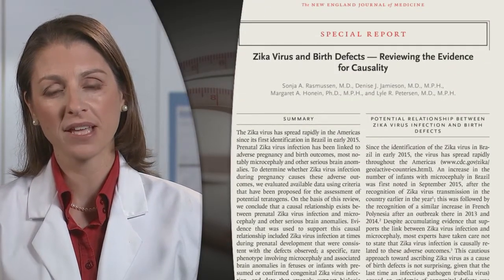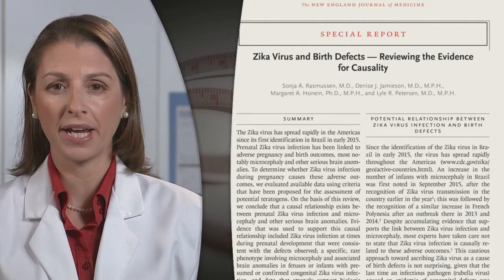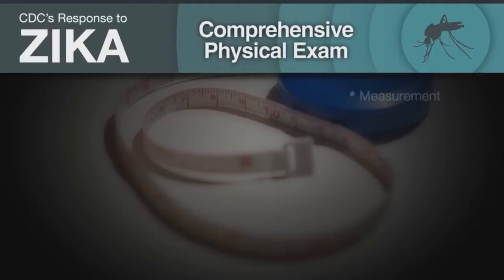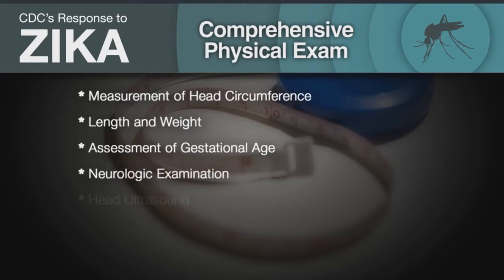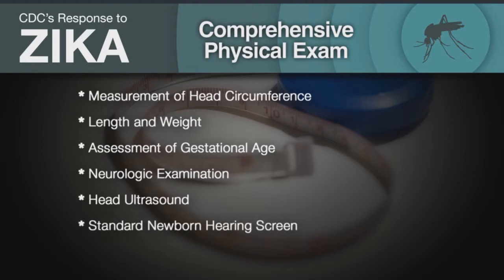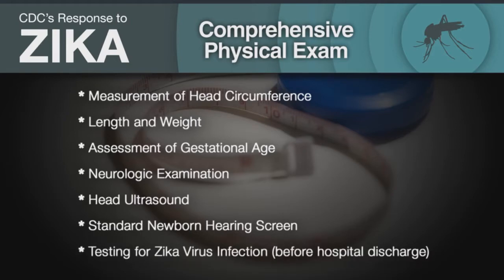Zika virus is a cause of microcephaly and other severe fetal brain abnormalities. All infants born to mothers with laboratory evidence of confirmed or possible Zika virus infection during pregnancy should receive a comprehensive physical exam, including measurement of head circumference, length and weight, an assessment of gestational age, a neurologic examination, a head ultrasound to assess the brain structure, a standard newborn hearing screen, and testing for Zika virus infection before hospital discharge.